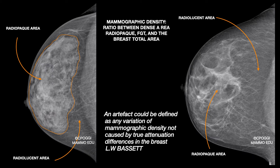According to the definition by Dr. Bassett, an artifact is any variation of mammographic density not caused by true attenuation differences in the breast. These are the densities you can find in a mammographic image: the dense area, radiopaque, is fibroglandular tissue, and the non-dense area, radiolucent, is made of fat. Mammography density is generally defined as the ratio between dense area and the total area of the breast imaged.